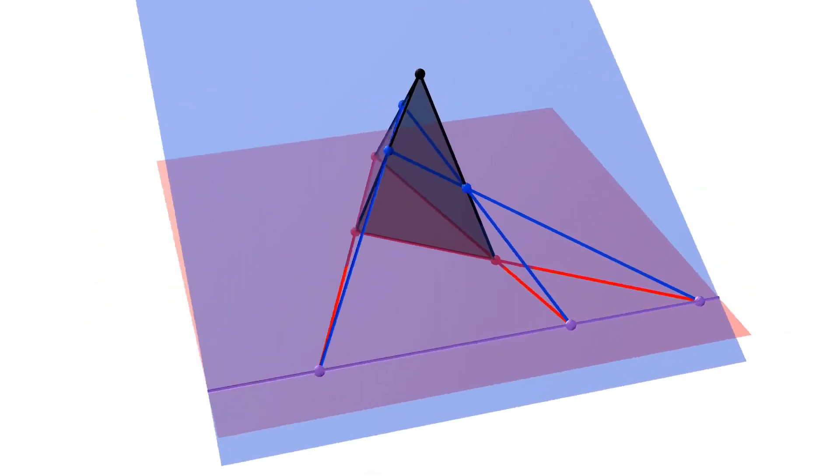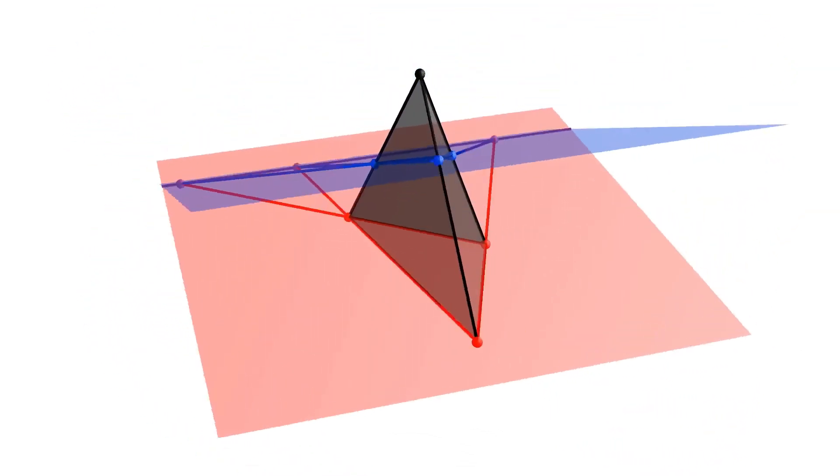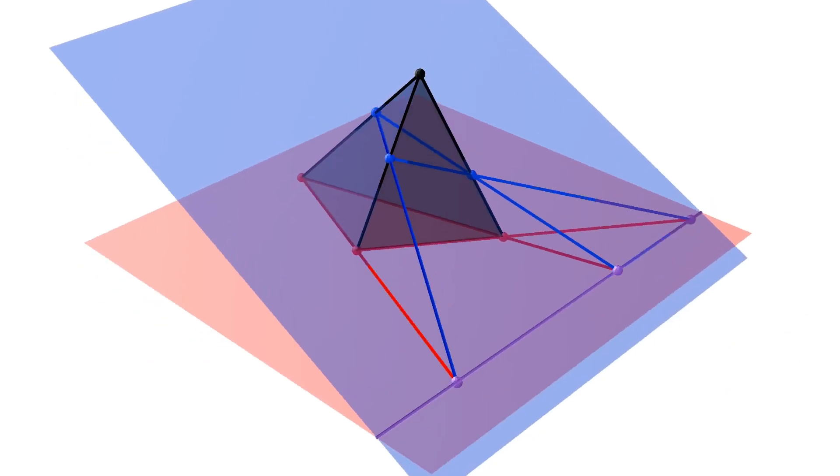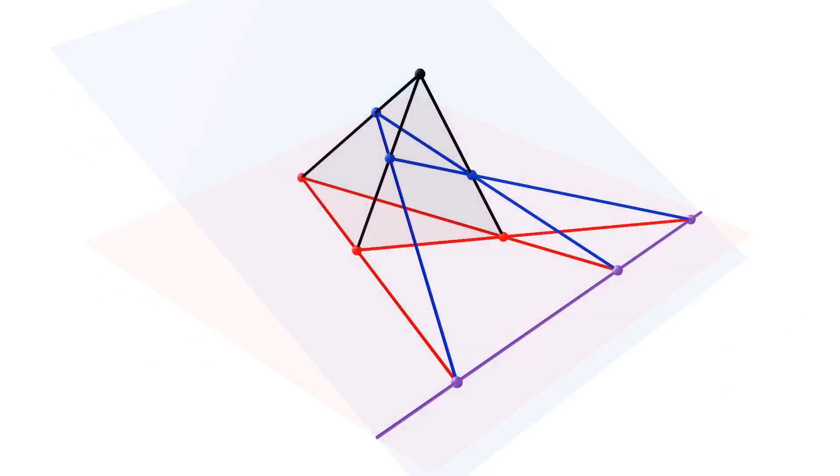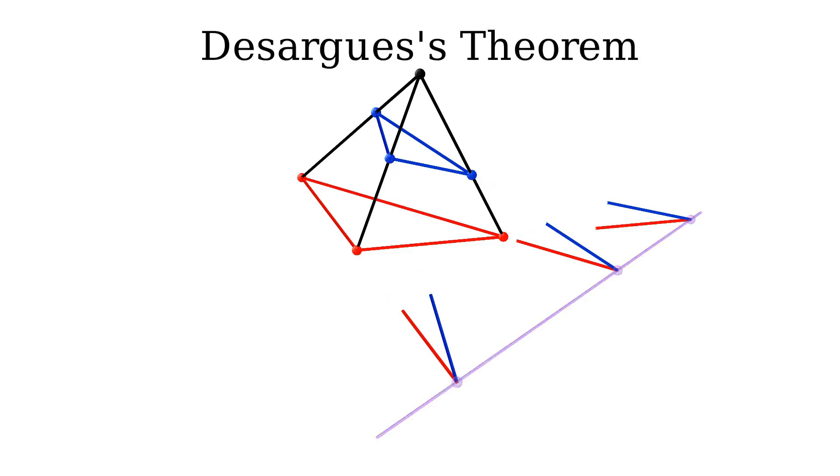So far, this is just a trivial three-dimensional construction. But now, interpret it as a two-dimensional picture. We get what's called the Desargues theorem. If three lines connecting vertices of the red and the blue triangle intersect at one point, then three intersections of the corresponding sides all lie on one line.